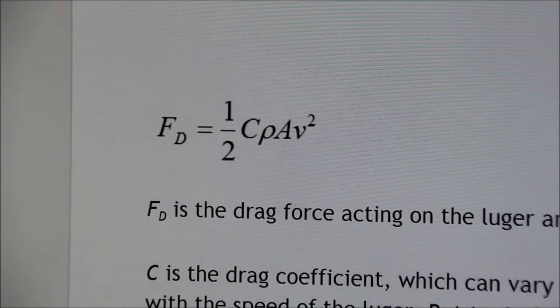Drag force is air resistance that works opposite the direction of the slider, and it pushes down from the sled. G force is the force that acts on the accelerating body, which is the lugger, and it pushes upward on the sled. Aerodynamic drag is motion resistance by the air on the lugger and the sled. So the lower the drag, the higher the speed of the sled.